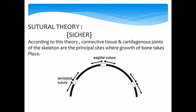He also explained, using the example of the cranial vault, that the cranial vault grows by expansive proliferative growth at the sutural connective tissue, which forces the bones to move away from each other, leading to an increase in size of the cranial vault.